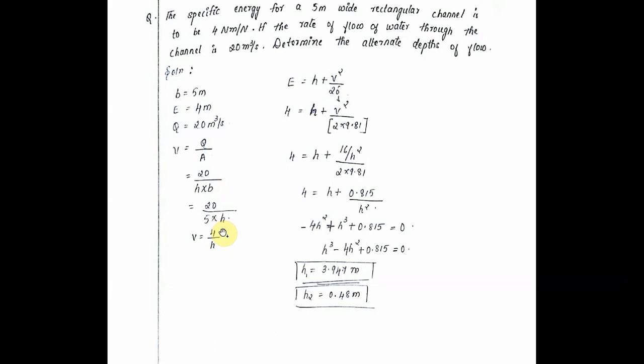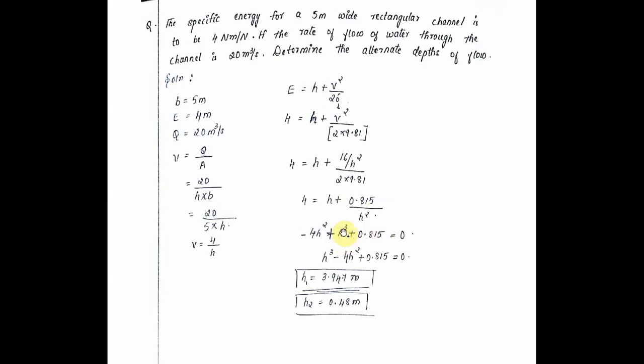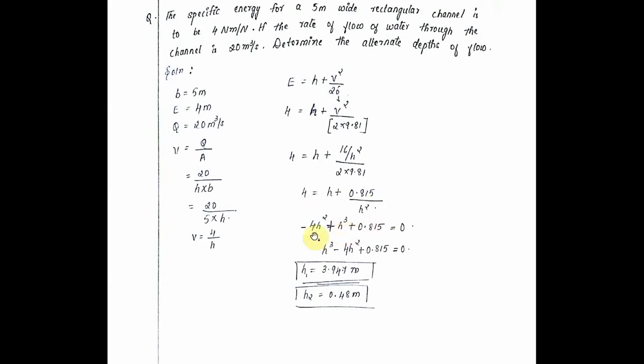So 20 divided by 5 into h, that is 4 upon h. We know that E equals h plus v squared upon 2g. Therefore 4 equals h plus v squared upon 2 into 9.81. So 4 equals h plus 16 divided by h squared into 2 into 9.81. Therefore 4 equals h plus 0.815 divided by h squared. So the equation formed is minus 4h squared plus h cubed plus 0.815 equals 0.